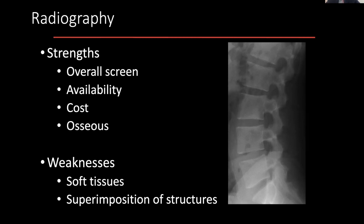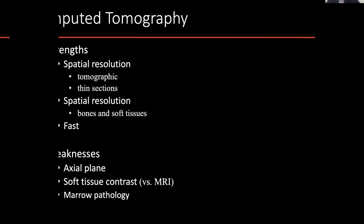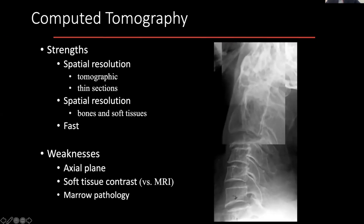Particularly using whole-spine radiography, there are several biomechanical features that can be assessed — looking at various angles and orientations. As spinal surgeons you'll learn all about the various angles and contours that you may need to consider before performing deformity surgery, and that predominantly relies on plain film radiography or some variant of it.